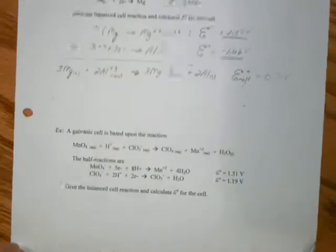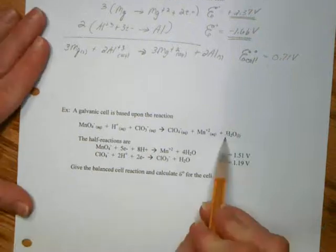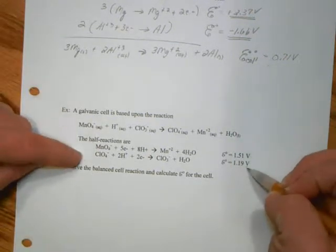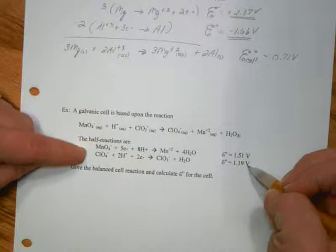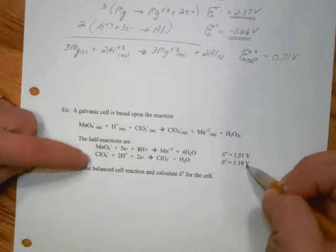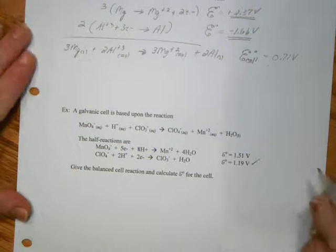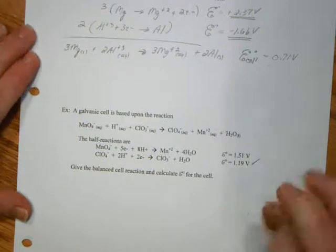Let's look at another example. Again, we are given the overall reaction, but if we want to take the E from our reductions, we will flip the one. So whenever we change the sign of the one that we flipped, these will add to give us a positive value. So that would be this one. So this will become my oxidation.